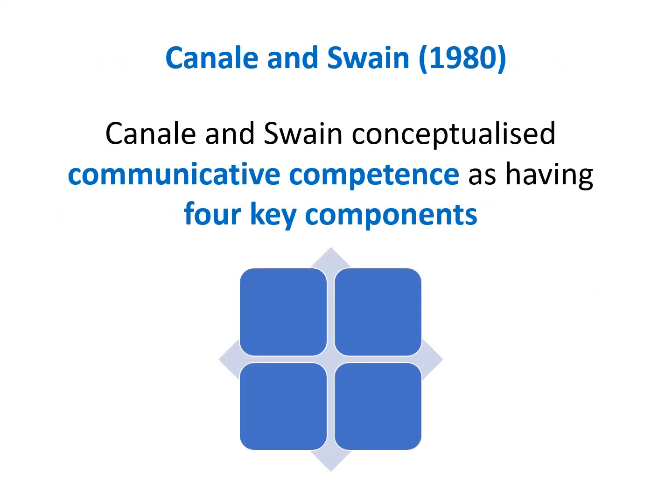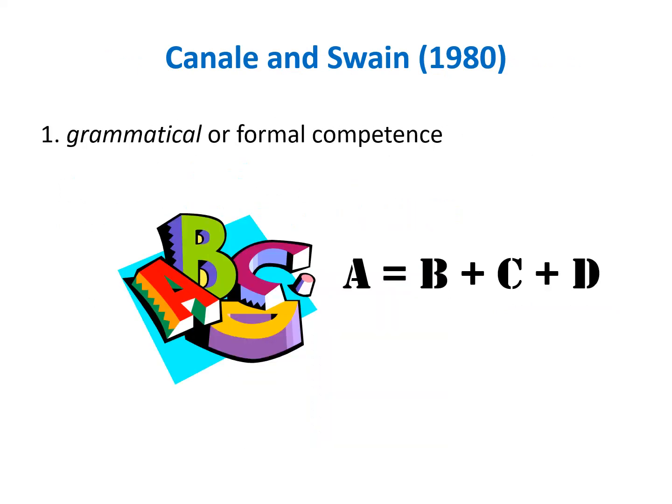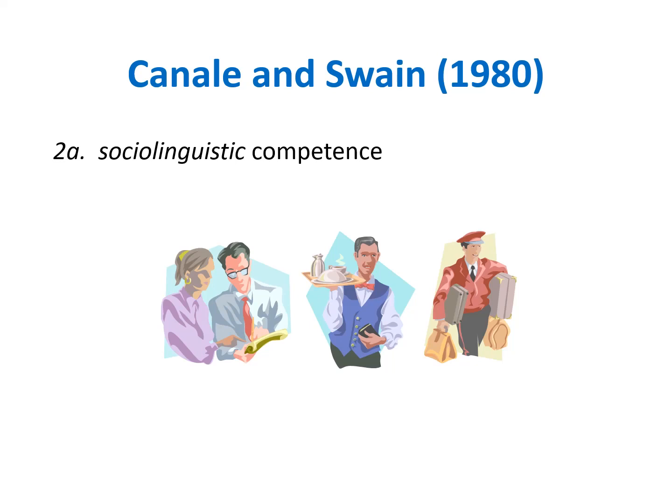Canale and Swain conceptualized communicative competence as having four key components. The first was grammatical or formal competence — knowledge of systematic features of grammar, lexis and phonology. They argued that understanding the grammar rules and how they should be applied was important for competent communication. Next came sociolinguistic competence: knowledge of the rules of language use in terms of what is appropriate to different interlocutors in different settings. The type of language used with friends differs greatly from language used with a lawyer or police officer.